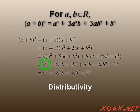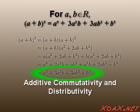we get a cubed, plus 2a squared b, plus ab squared, plus a squared b, plus 2ab squared, plus b cubed. Combining the terms via distributivity, we get a cubed, plus 3a squared b, plus 3ab squared, plus b cubed.